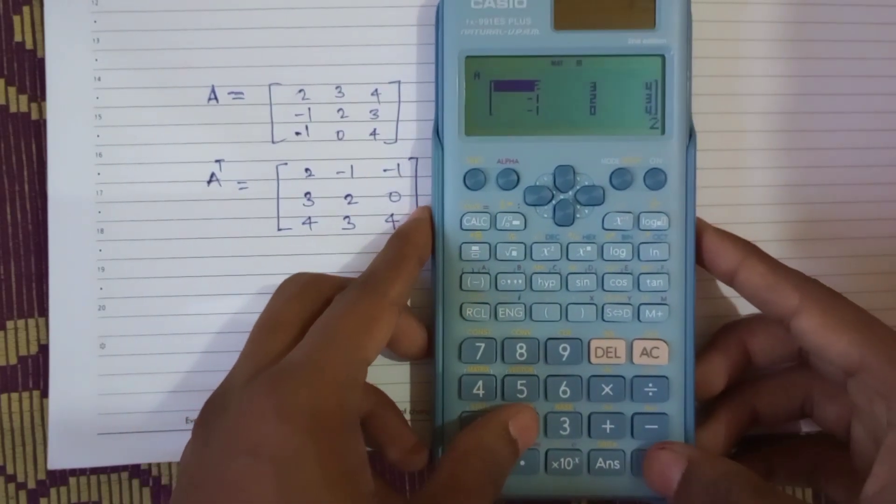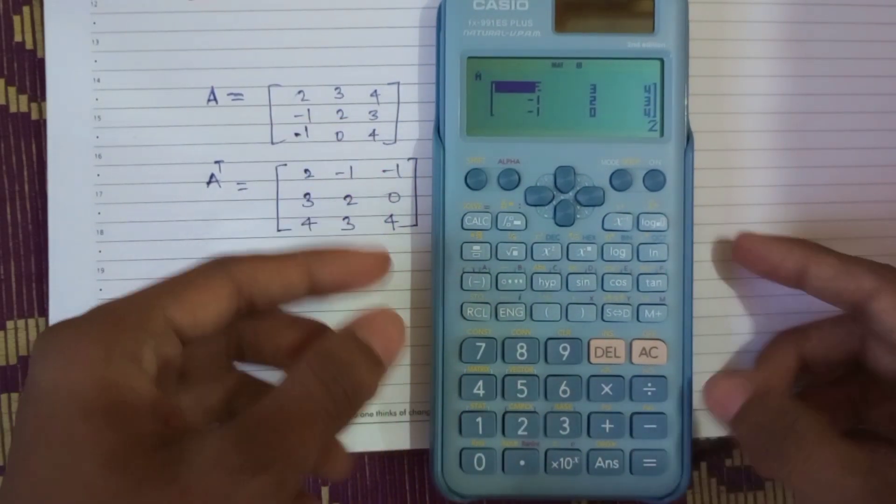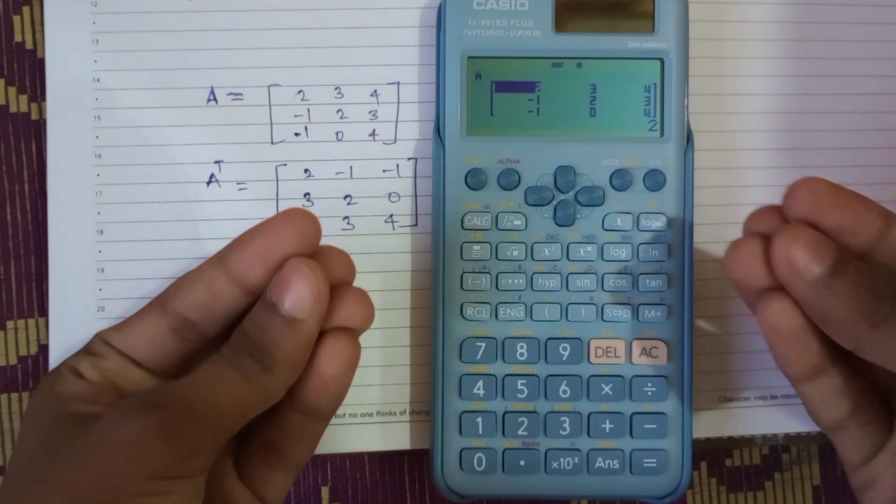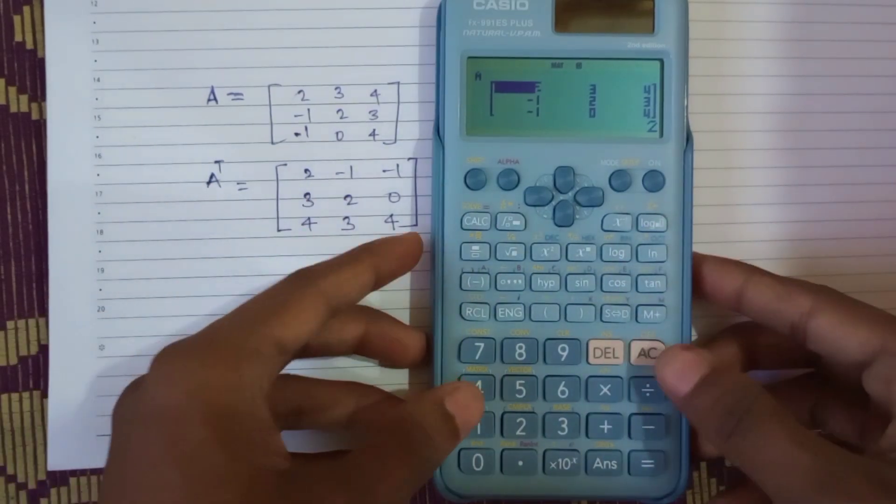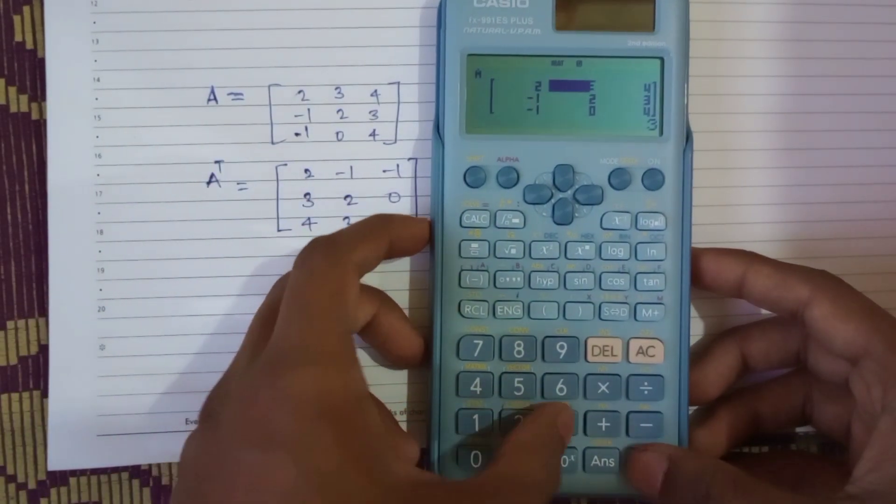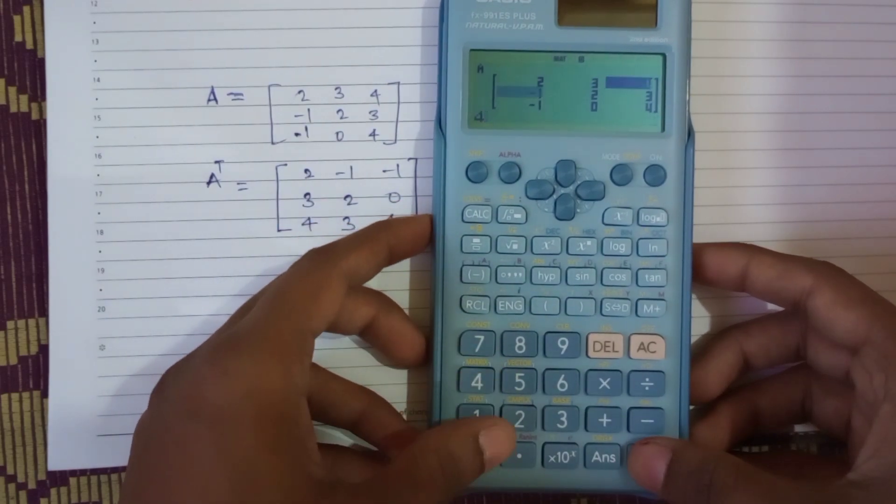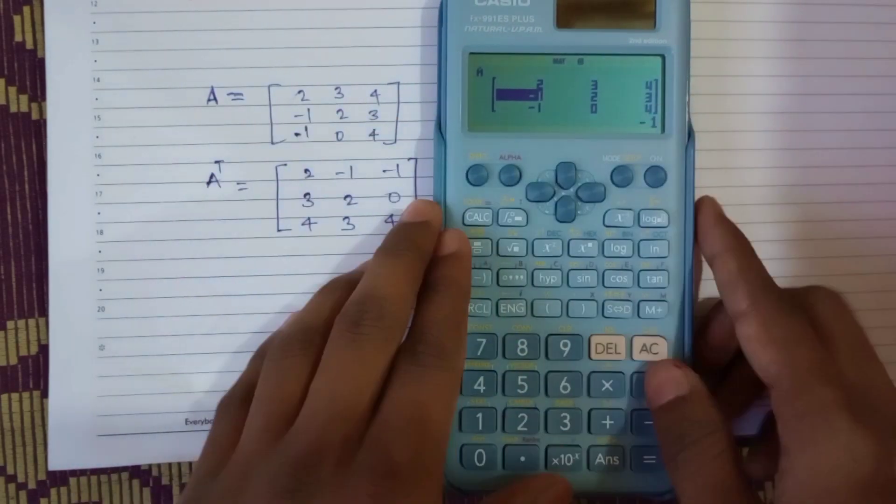So just you have to put all these values accordingly. You just have to press equals to after one another, like this: 2, 3, 4 and so on. I have put it, it's done.